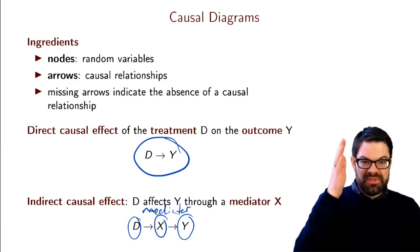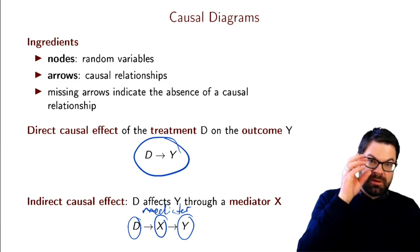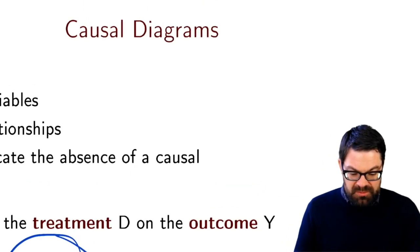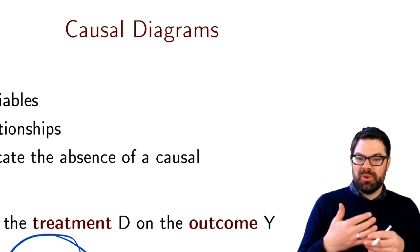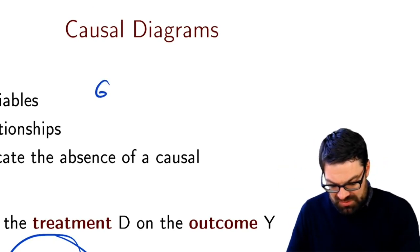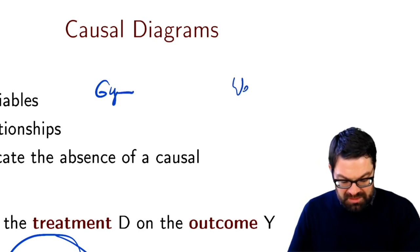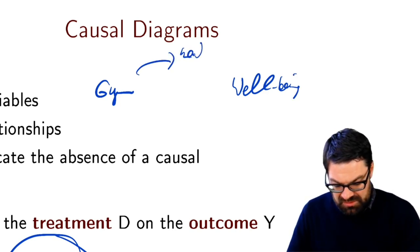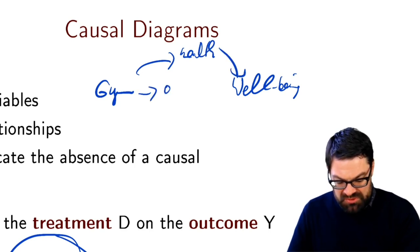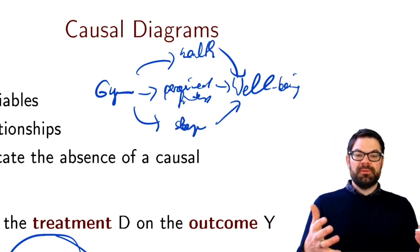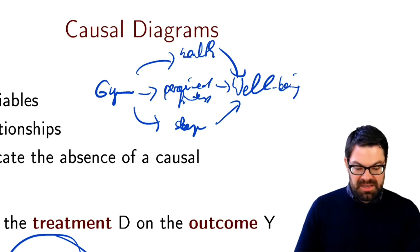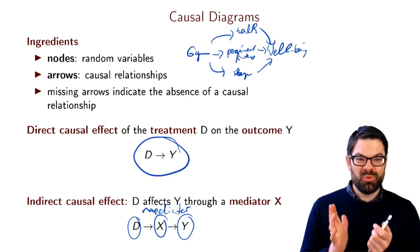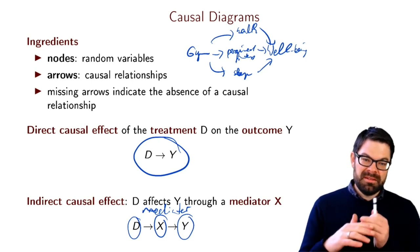In many cases there are many mediators one could think about. Think about the treatment being whether a person regularly goes to the gym and the outcome being well-being. There are obviously many causal paths: one is health, one is maybe perceived fitness, there could be things like better sleep that then affects well-being, and so on. So there are often many mediators, and as we will see later in this lecture, mediators will play an important role in thinking about research design.